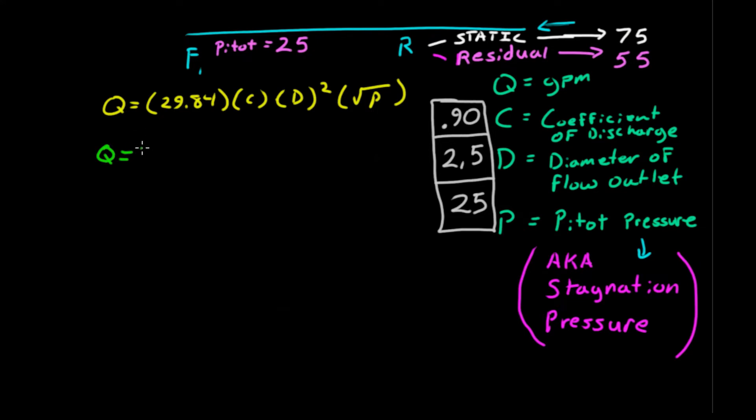29.84 is a constant. Coefficient of discharge would be 0.9, and then 2.5 squared is 6.25. And pitot pressure of 25, the square root of 25 is 5. And just as a side note, pitot pressure is also known as stagnation pressure, not static pressure. Totally different pressure.